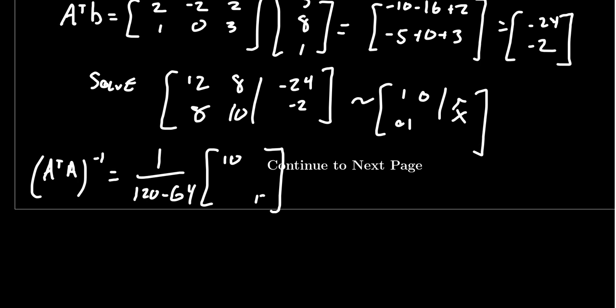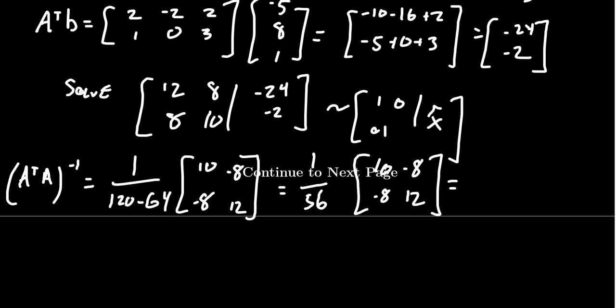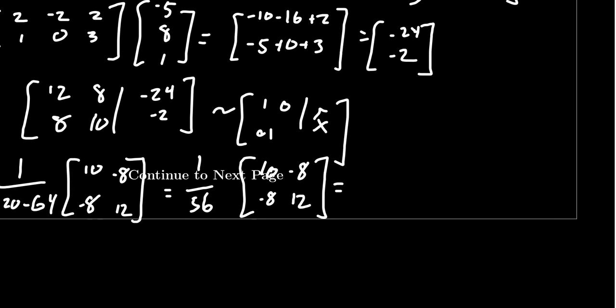For a 2×2 matrix, the inverse is 1 over the determinant times the adjugate: swap the diagonal entries to get 10 and 12, and negate the off-diagonal entries to get negative 8 and negative 8. So we get (1/56) times [10, -8; -8, 12]. Factoring out 2 from the matrix and dividing into 56 gives 28, so A transpose A inverse equals (1/28) times [5, -4; -4, 6].